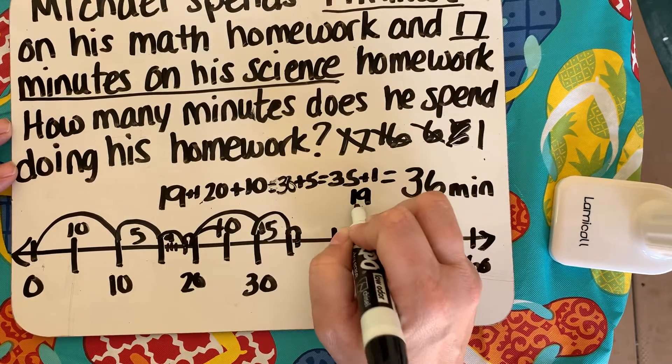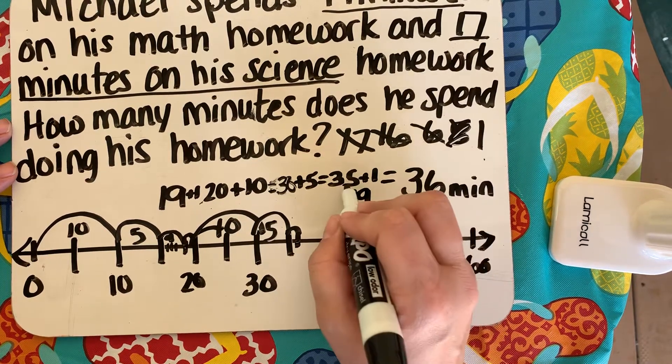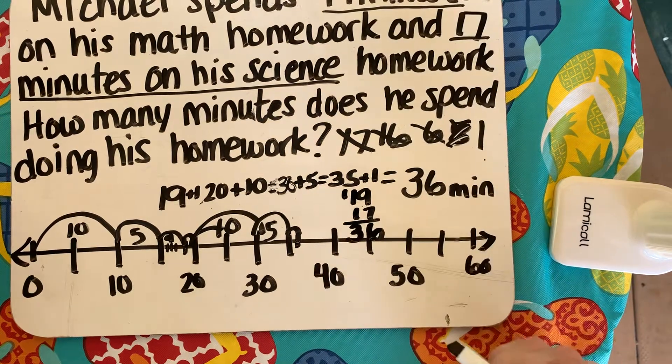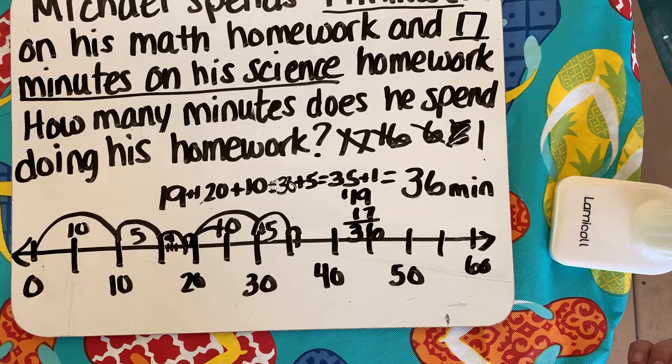So 19 and 17 equals 7. 9 plus 7 is 6. Carry the 1 is 36. So I checked our math doing an equation too. It does want you to do the timeline and the equation on this problem too.